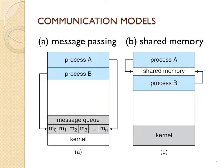Looking at these figures, Figure A shows message passing. Message passing was a problem with the microkernel because each time messages are passed using send and receive primitives, the operating system needs to get involved in all of the management of this message passing.